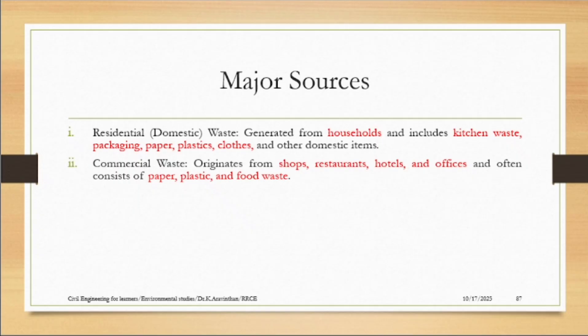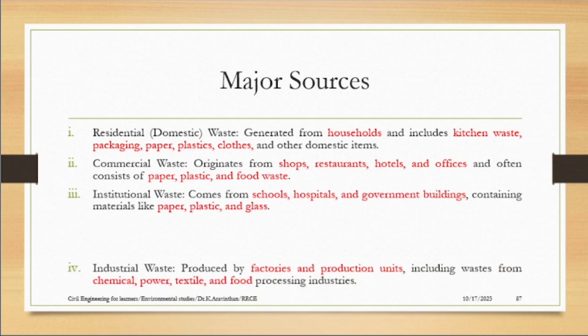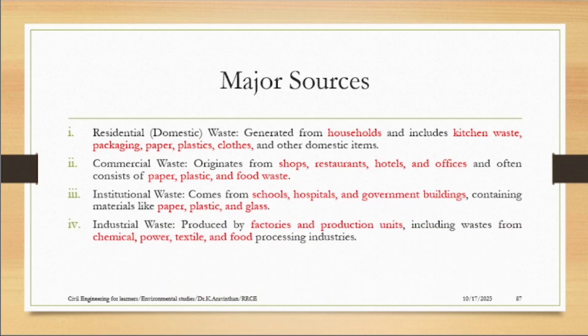Commercial sources consist of restaurants, hotels, and offices. Next is industrial waste. Institutional waste — the government is an institution, along with hospitals and schools. From institutional sources you get paper, plastic, and glass. Even though the origin is different, the waste is essentially the same: in houses, commercial places, and institutions, you have paper and plastic.